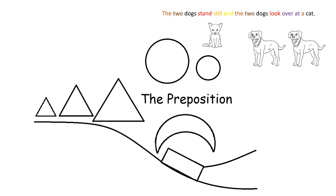You can see here in this sentence, the two dogs stand still and the two dogs look over at a cat, that I have colored the words over and at purple. The words over and at describe where the dogs are looking. Therefore, over and at are preposition words.